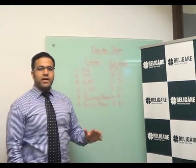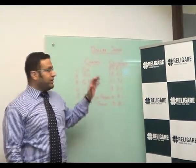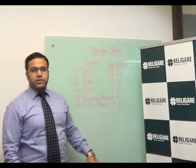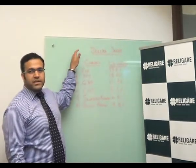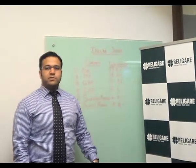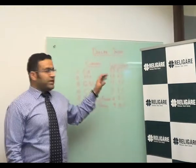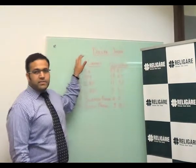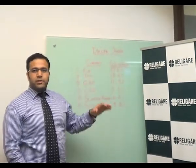Now since all the commodities are priced in US Dollars, any movement in the US Dollar impacts significantly the prices of commodities. So basically the Dollar Index is inversely proportional to the commodity prices.